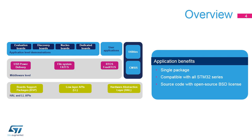STM32CubeG4 gathers, in a single package, all the generic embedded software components required to develop an application on STM32G4 series microcontrollers. The package includes low-layer and hardware abstraction layer APIs that cover the microcontroller hardware, together with an extensive set of examples running on STMicroelectronics boards.